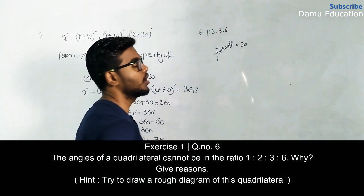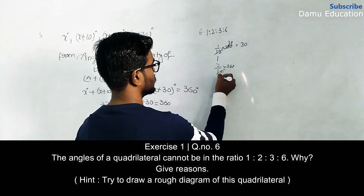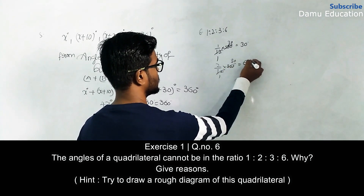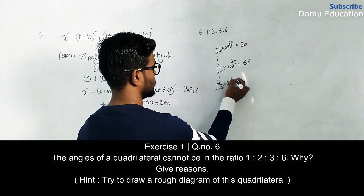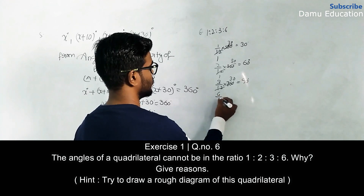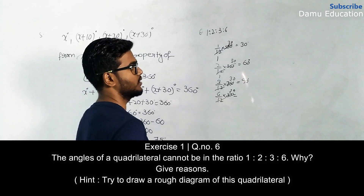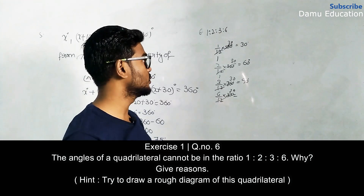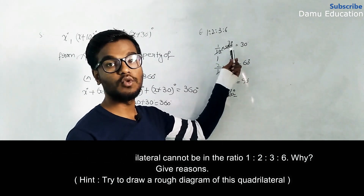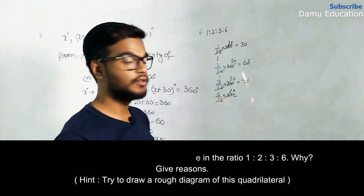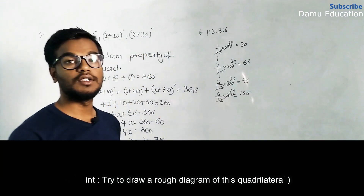To find each angle, we multiply each ratio part by 360 divided by 12, which is 30. So angle A equals 1 by 12 into 360 equals 30 degrees, angle B equals 2 by 12 into 360 equals 60 degrees, angle C equals 3 by 12 into 360 equals 90 degrees, and angle D equals 6 by 12 into 360 equals 180 degrees.